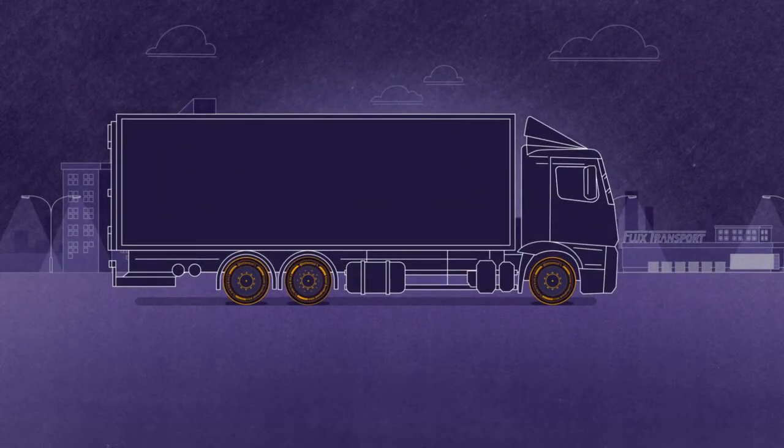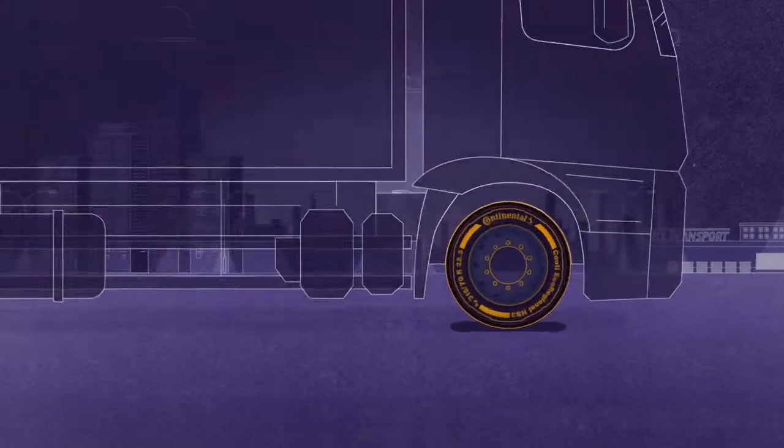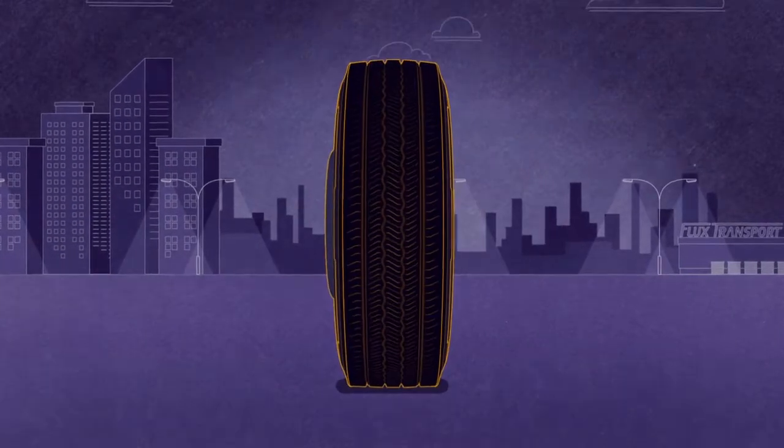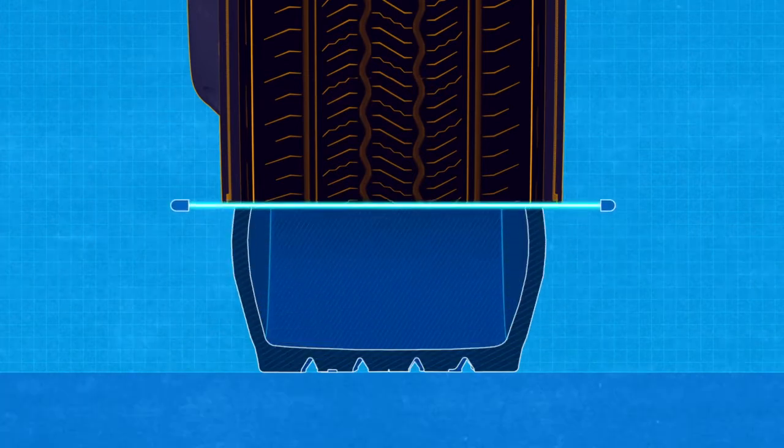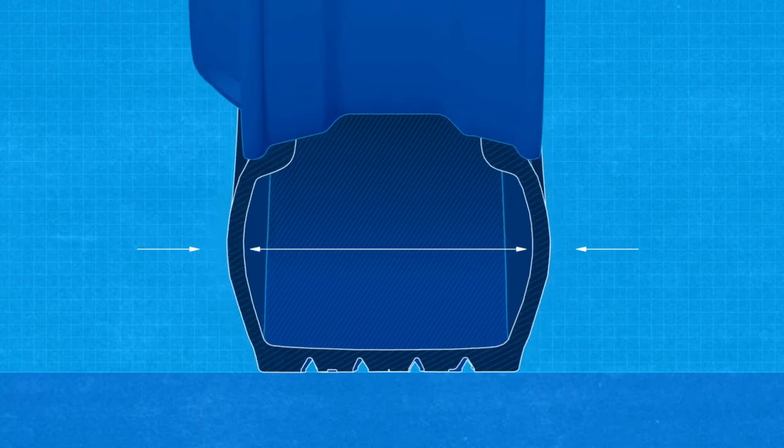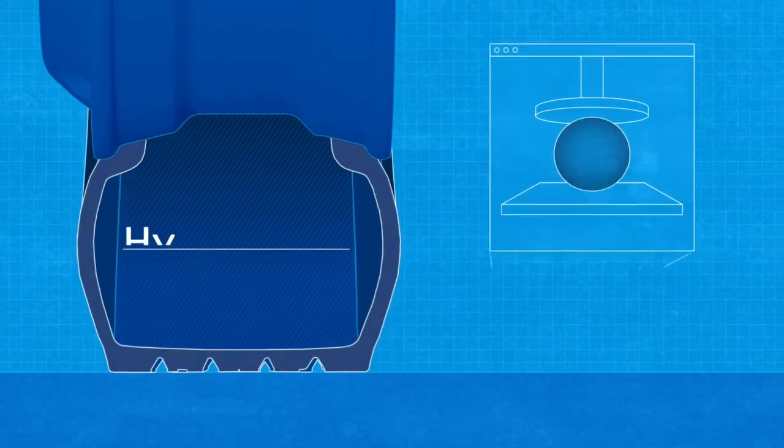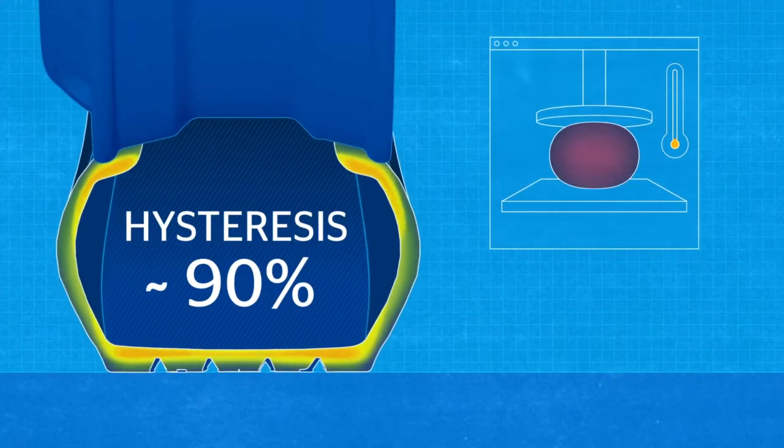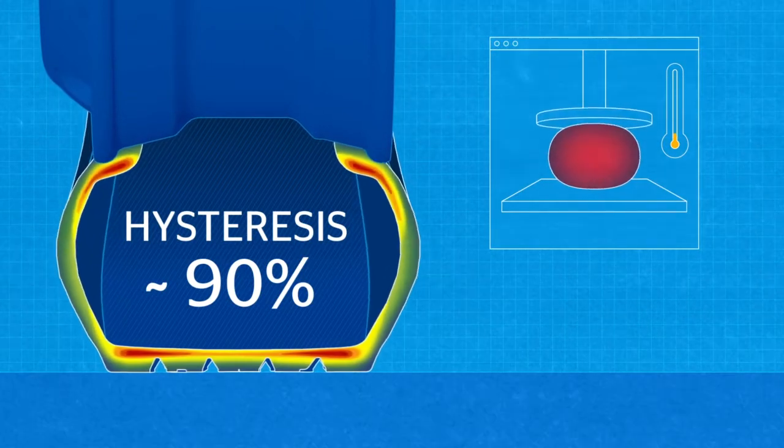As soon as a rubber tire bearing the weight of a vehicle begins to move, the tread and sidewall are subjected to flexing, bending, and shear forces. The tire continually deforms and recovers its shape. And in this process known as hysteresis, energy is lost, dissipated in the form of heat.